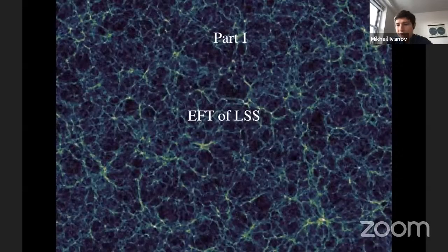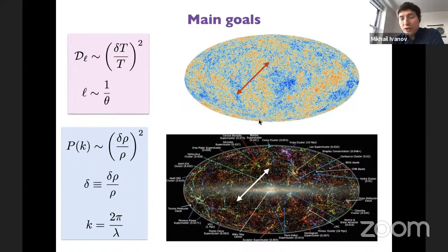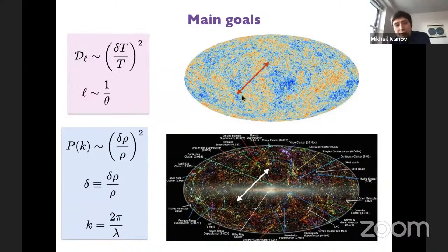Let me first give you some introduction on the Effective Field Theory of Large-Scale Structure. Our main goal is to improve our understanding of nature from cosmological observations. The bulk of our understanding so far has come from measurements of the cosmic microwave background radiation — its fluctuations in temperature observed from the sky. These fluctuations represent a random stochastic field, best described in terms of summary statistics like correlation functions, the simplest being the two-point function called the power spectrum.